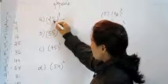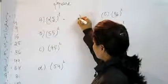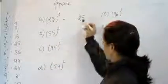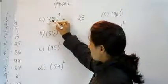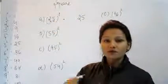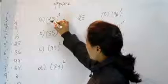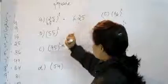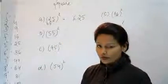This is 5. 5 into 5 is 25. And now this 2, multiply this 2 with a number which comes after it. So what comes after 2? That is 3. 2 into 3 is 6.